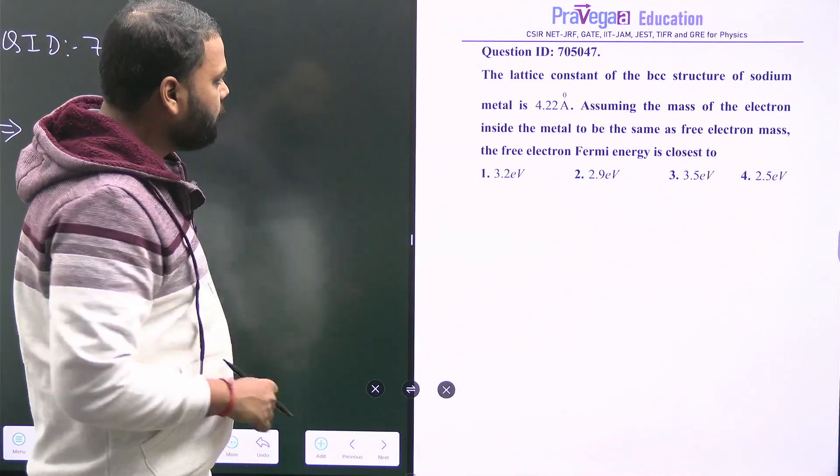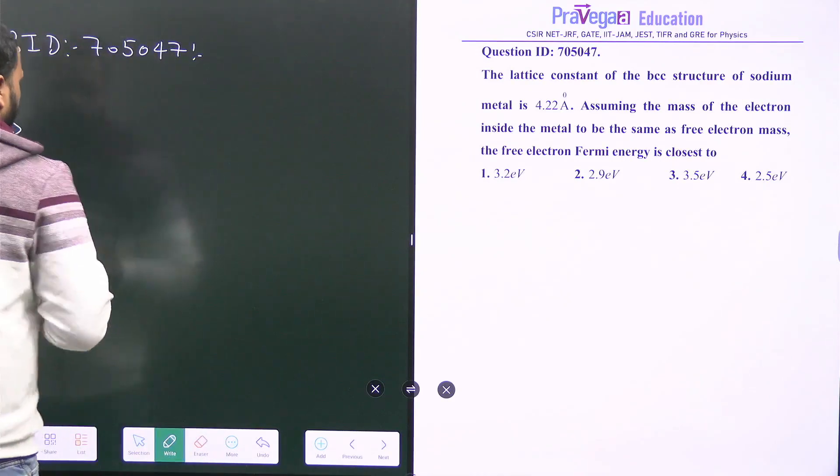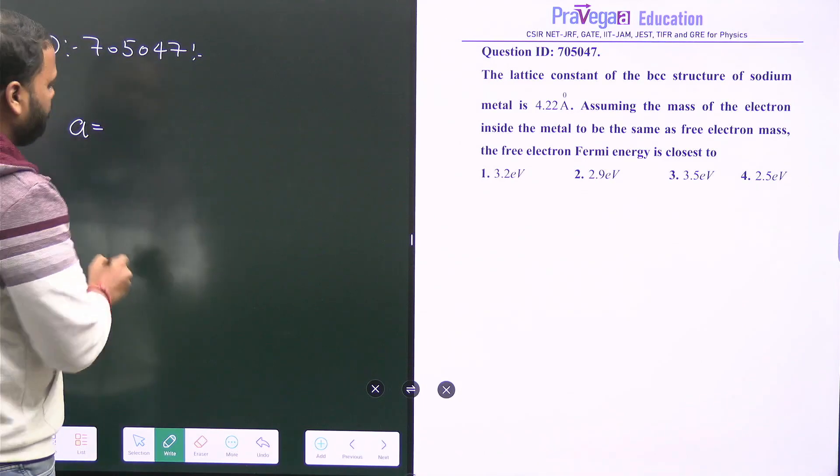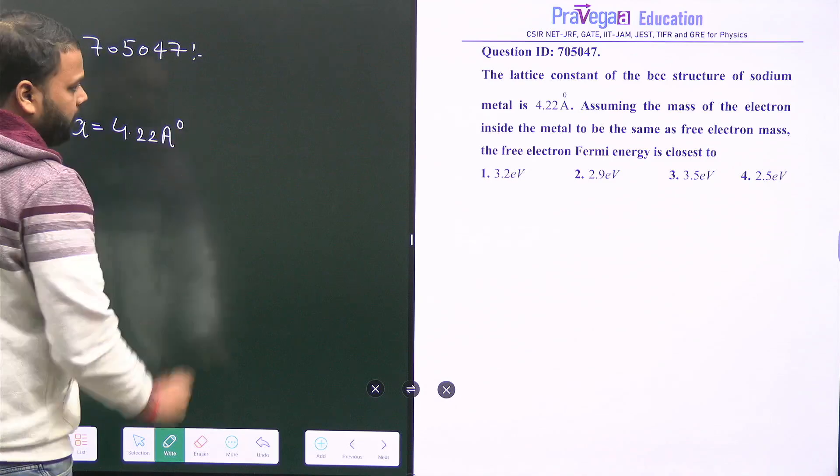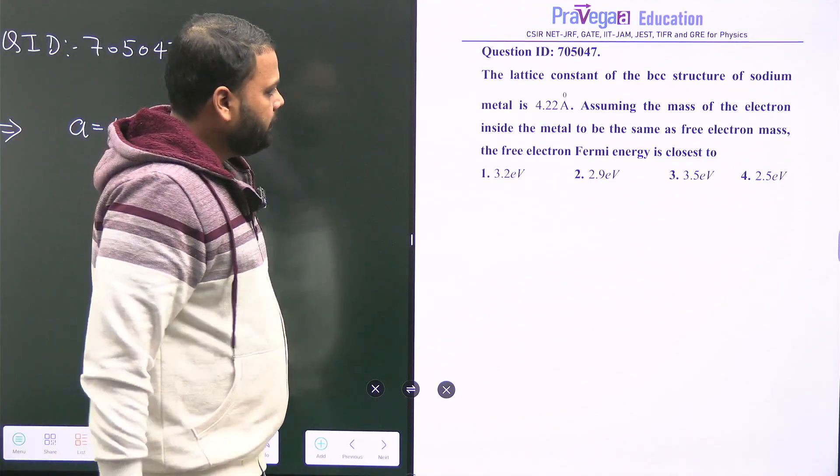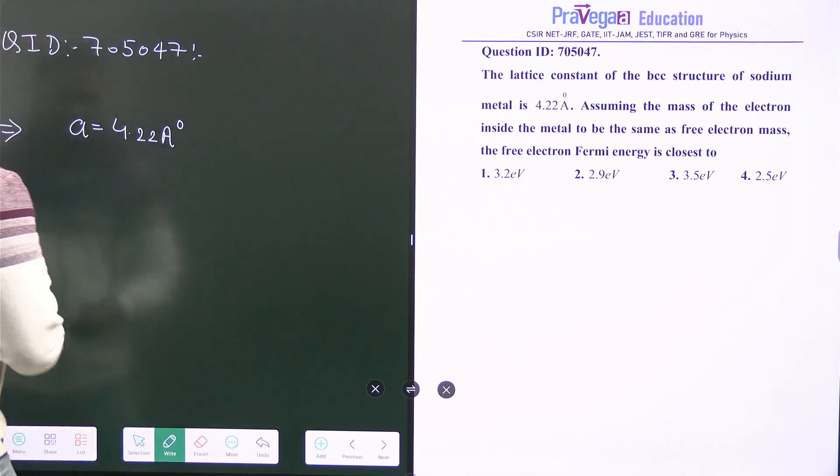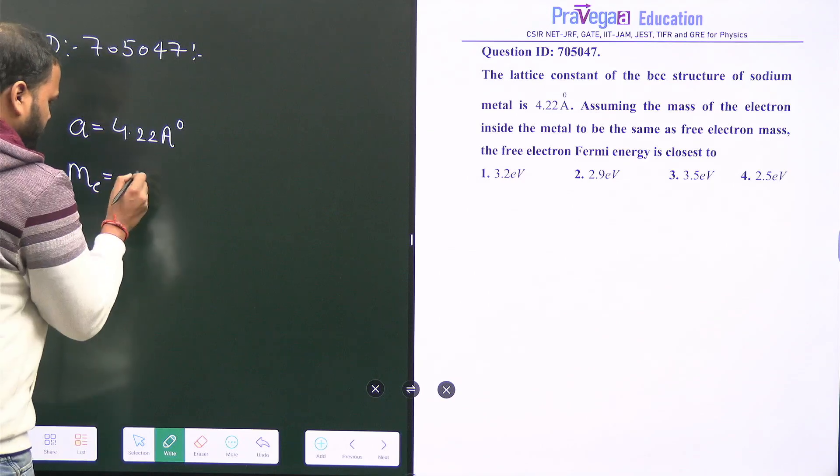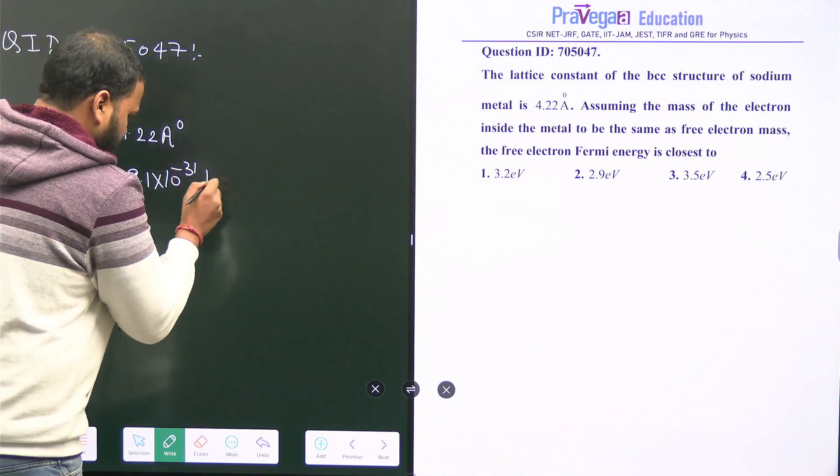The lattice constant of the BCC structure of sodium metal, I'm denoting by small a, is given as 4.22 angstrom. It's saying to assume the mass of electron inside the metal is the same as the free mass, that is 9.1 times 10 to the power minus 31 kg.